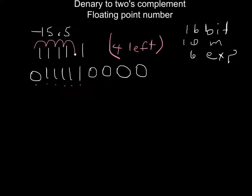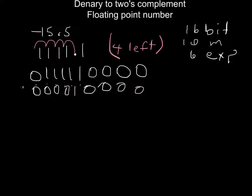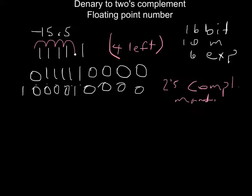Now, since the original number was negative, I'm going to convert to 2's complement. I'll use the alternate method: copying from right to left until I copy a 1, then flipping the remaining bits. Of course, the other method is to flip the bits and add one. This 2's complement result is also my mantissa.